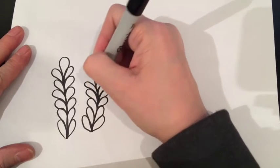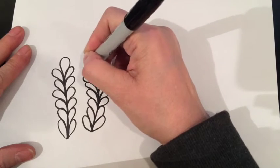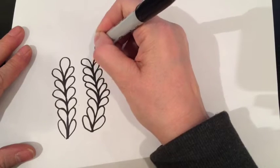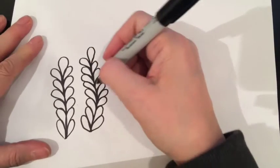This is a very easy pattern to draw. It's just a series of connected leaves in a vine shape.